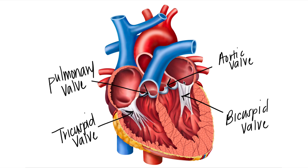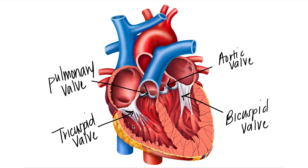Now we need to make sure we understand the valves between the atrium and the ventricles. We have first our tricuspid valve — tri meaning three — and we can see there are kind of three flaps right here. From the right atrium into the right ventricle is our tricuspid valve. Now our bicuspid, meaning two — you can see these two flaps — is between the left atrium and the left ventricle.